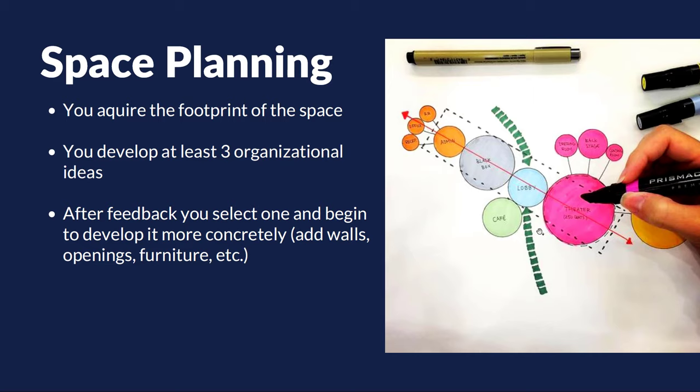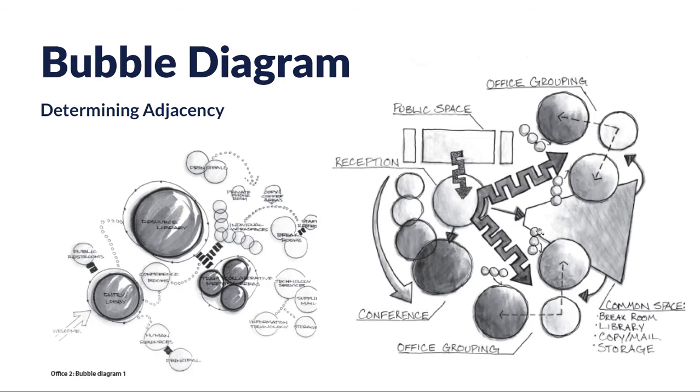At some point during this preliminary process for space planning you're going to acquire a footprint of the space. At this time you really want to develop at least three organizational ideas based on the footprint and the adjacency matrix. After feedback from the client you'll select one or maybe a couple, and begin to develop more concretely — adding walls, openings, and furniture. So the first step after client interviews, working on the program, and determining adjacencies with the adjacency matrix, is to start with bubble diagrams.